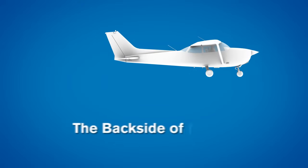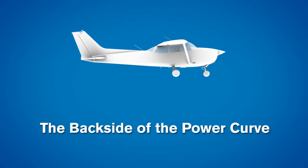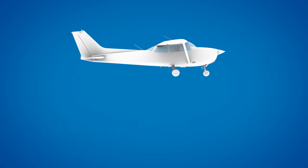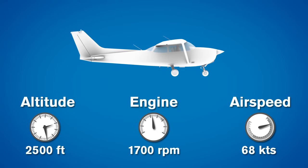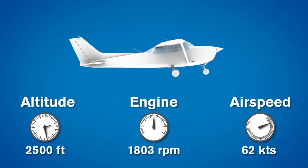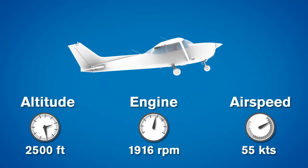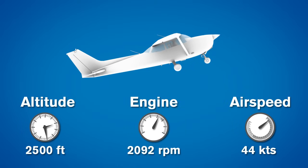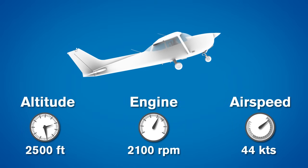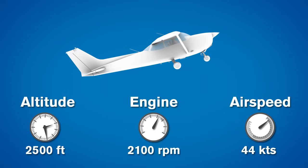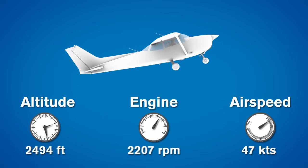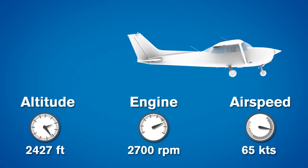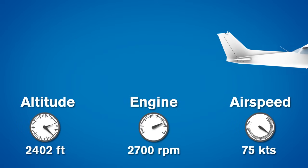In this region of airspeeds, sometimes called the backside of the power curve, the pilot will actually have to add more and more thrust to counter the high amounts of drag being created. In fact, if they want to accelerate out of this range of airspeed, they will have to add an excessive amount of power, maybe even full power.